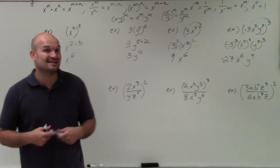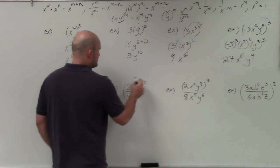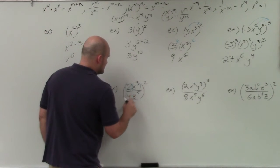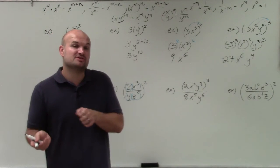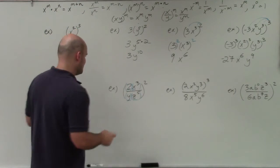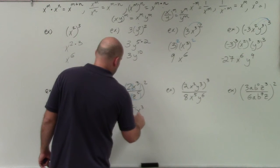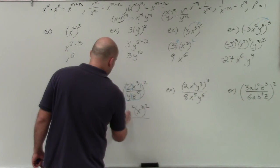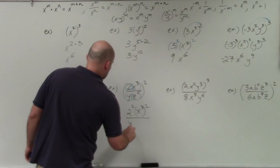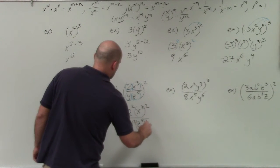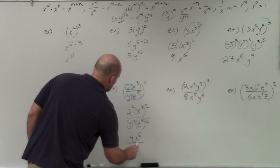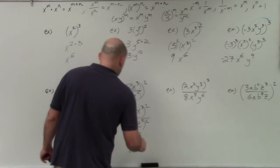Now I'm going to apply the power-to-product and quotient rules. This 2 is going to be distributed — I have 1, 2, 3, 4 terms, and that 2 is basically going to be distributed to each and every one of them. Since these terms are all separated by multiplication and division, that power distributes to all of them. This does not work when terms are separated by addition and subtraction — I just want to make sure because a lot of students get that confused. So 2 squared is 4, x cubed squared is x to the sixth, y squared becomes y squared, and 2z to the fifth raised to the second is z to the tenth.